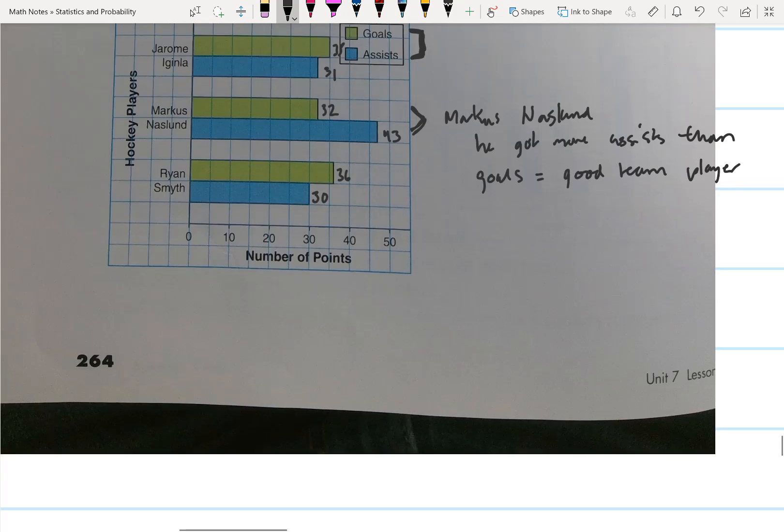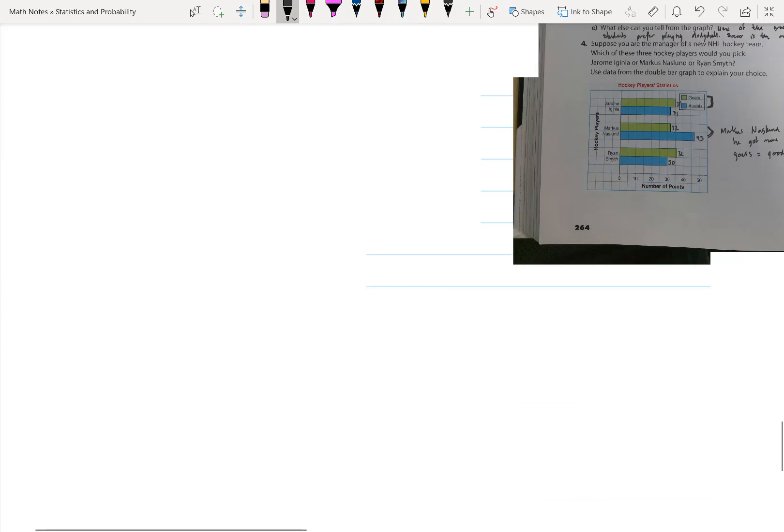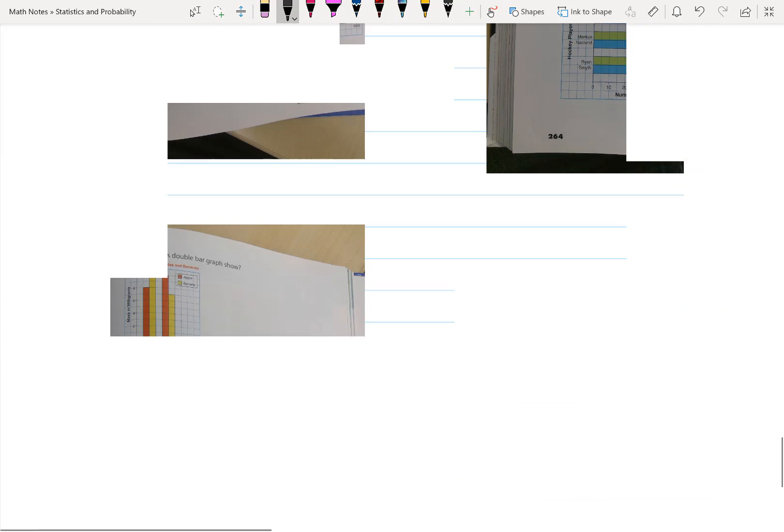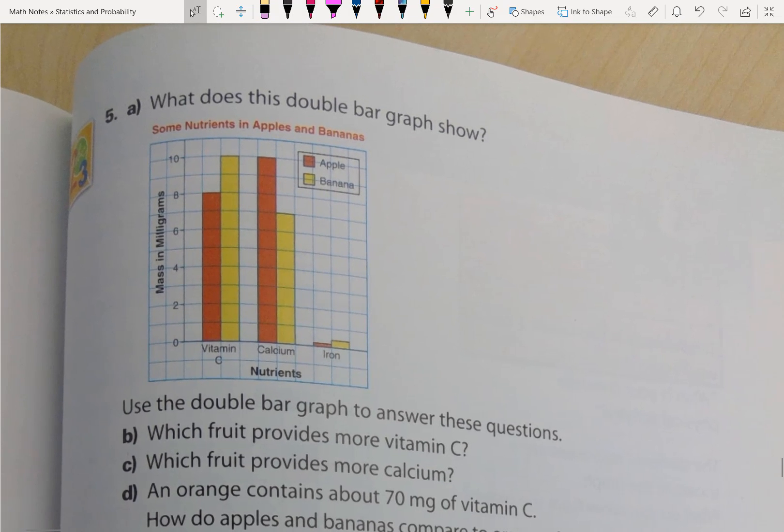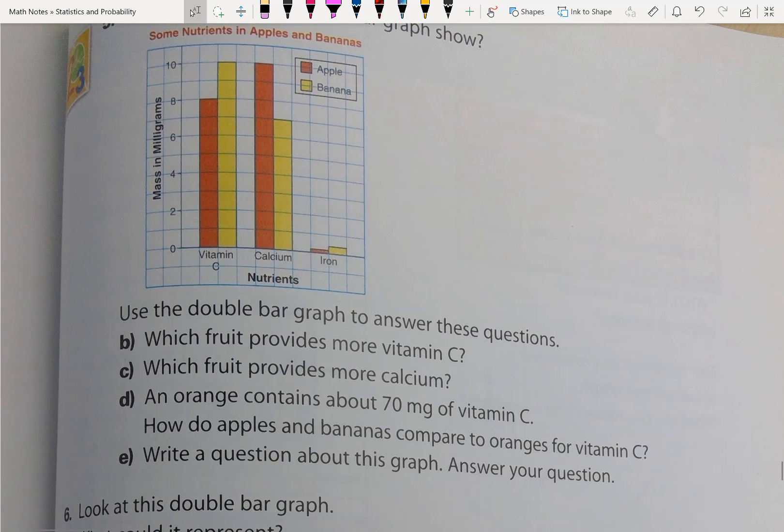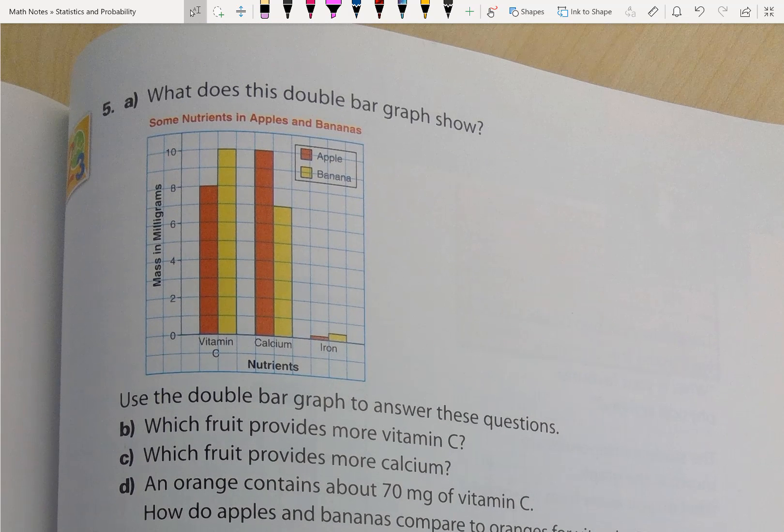Moving on to question 5. Question 5 is over here. What does this double bar graph show? So we can see by the title, some nutrients in apples and bananas. So it's comparing between vitamin C, calcium, and iron in apples and bananas.